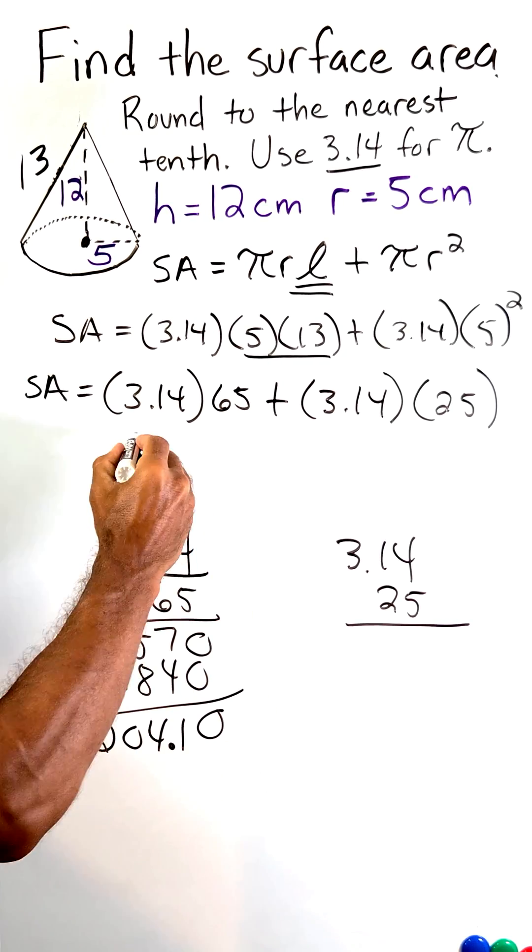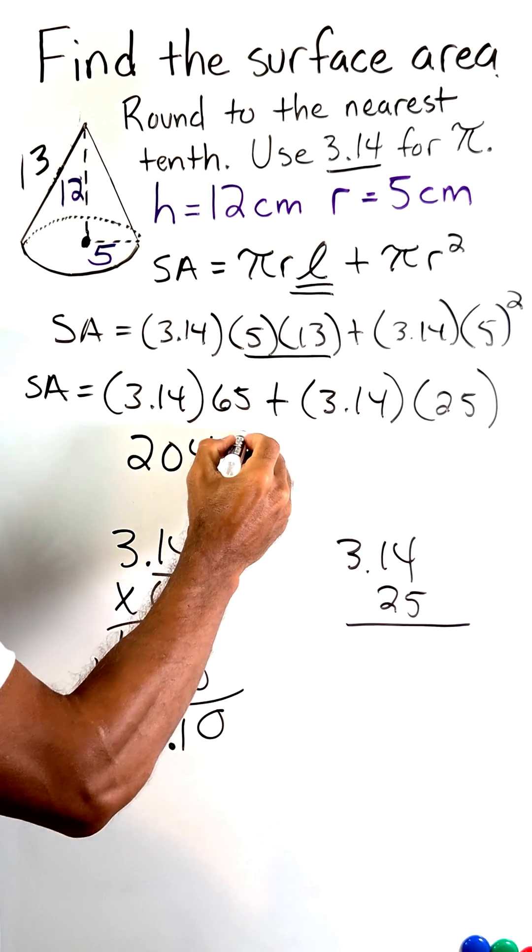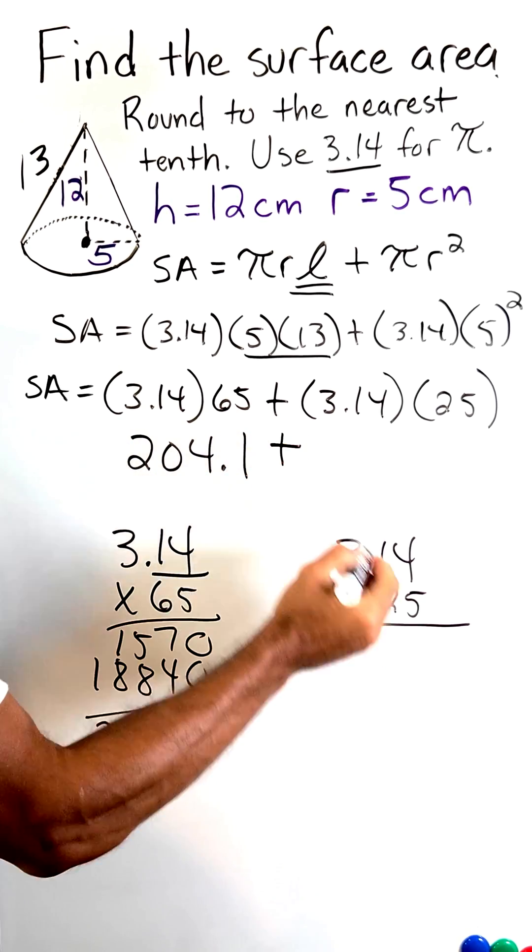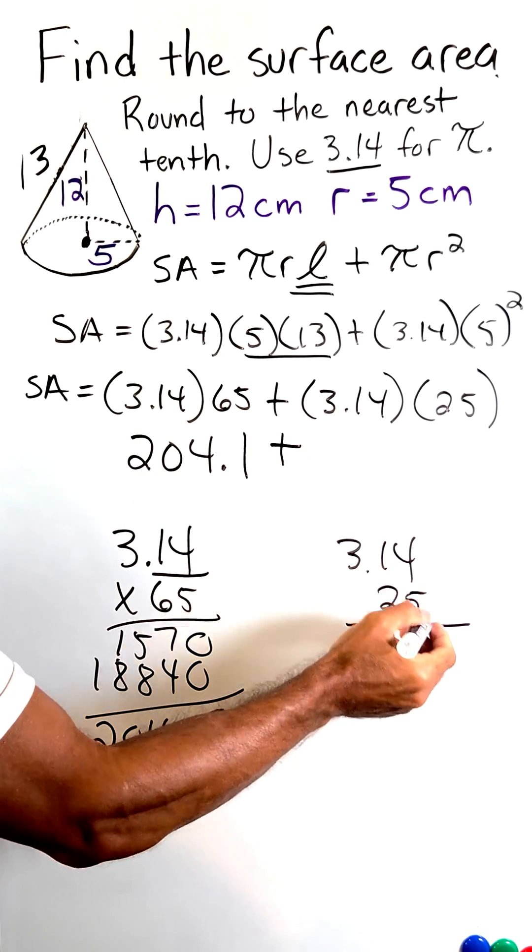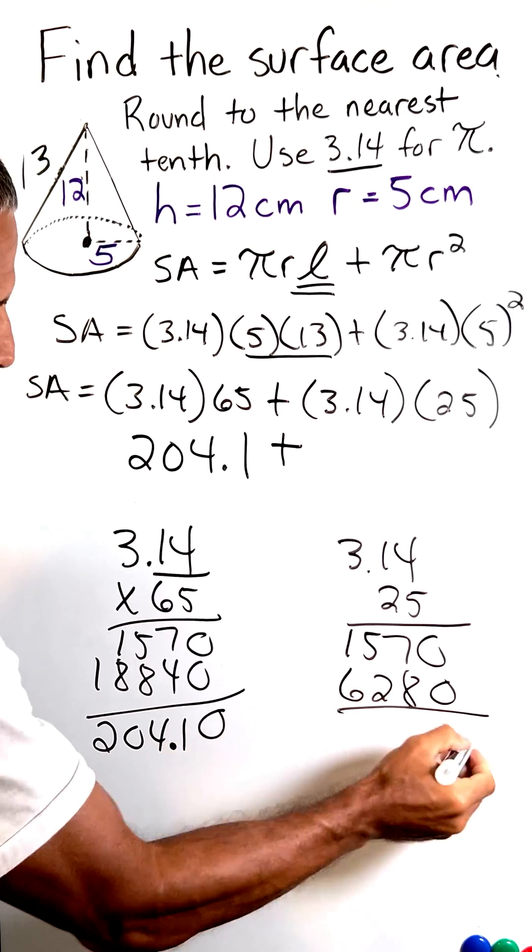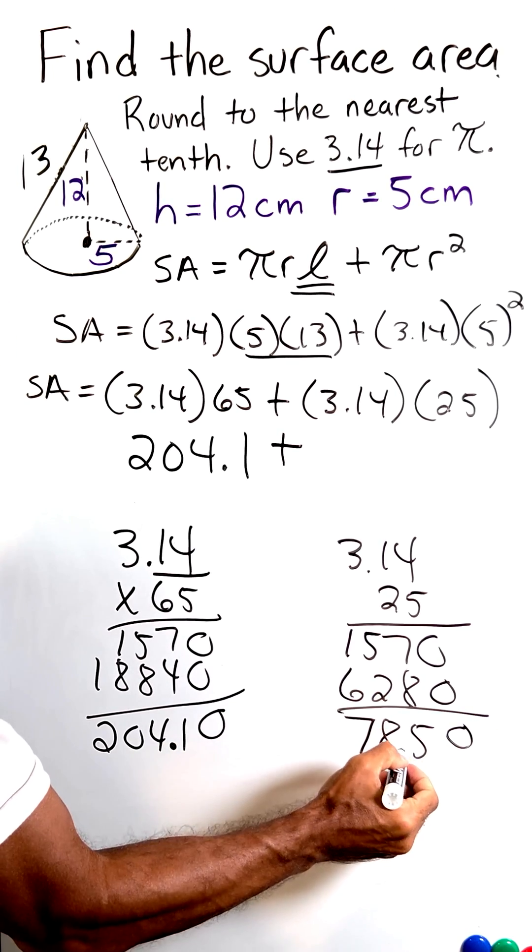So we come up with 204.1. We have to add that to the product of these two numbers, 78.5.